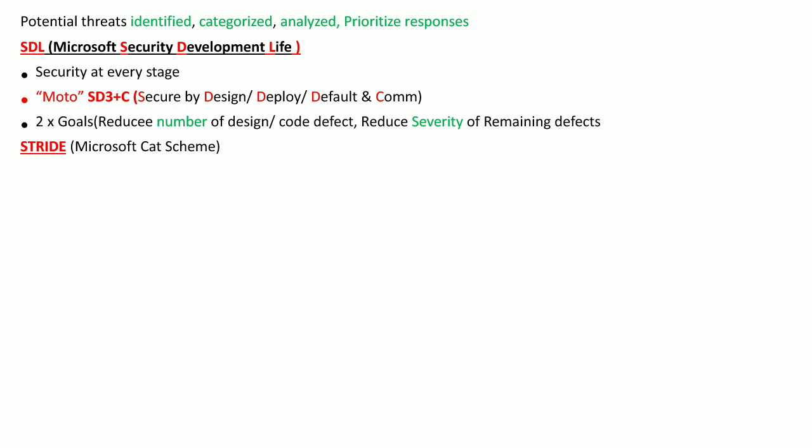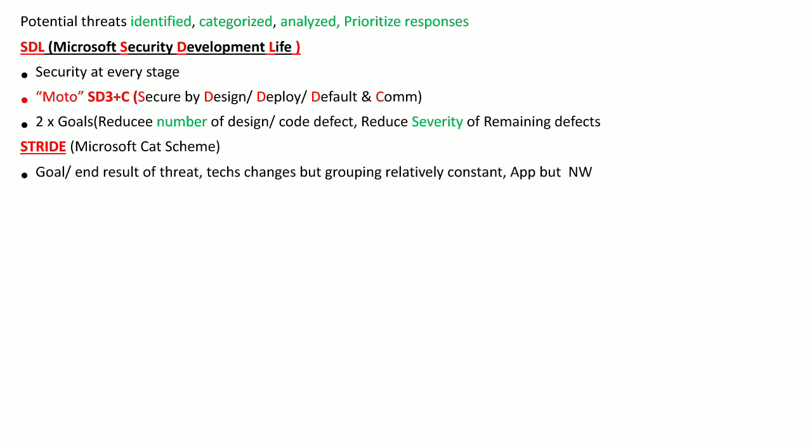The next threat categorization scheme is STRIDE, which stands for Spoofing, Tampering, Repudiation, Information Disclosure, Denial of Service, and Elevation of Privileges. The goal is to look for the end objective of an attacker — whether it is spoofing, tampering, repudiation, denial of service, information disclosure, or elevation of privilege — because technology changes over time but this grouping of threats remains constant.